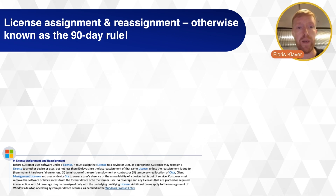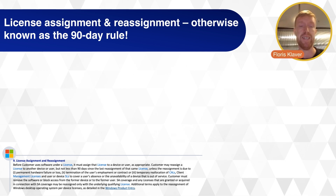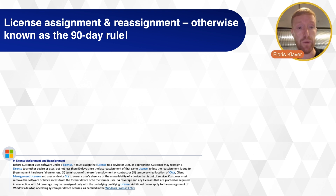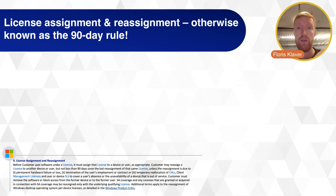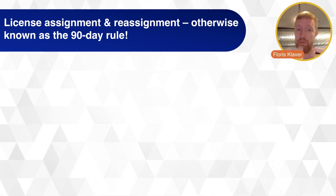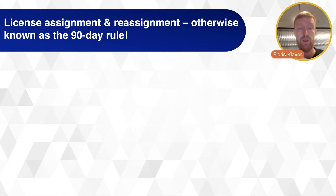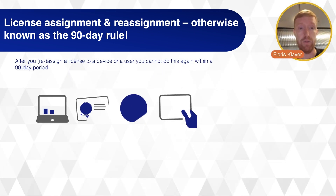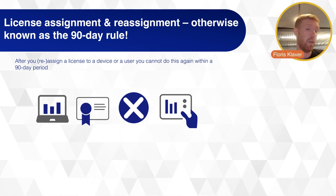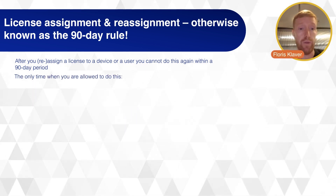License reassignment is one of the important aspects to call out — this is also known as the 90-day rule. Basically, if you buy a license from Microsoft and install it, you need to keep it on that machine. Or if you assign it to a person, that person has it for at least 90 days. You are not allowed to reassign it within a 90-day period, so you cannot the next day reassign it to a different machine.